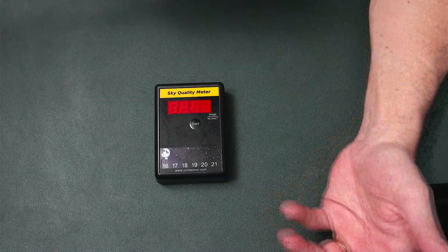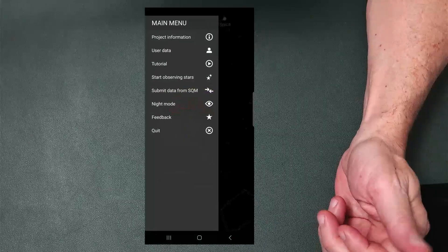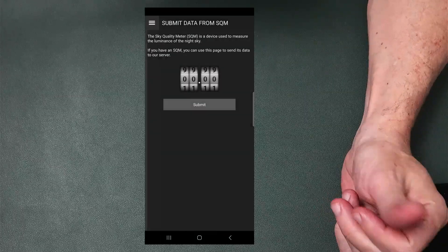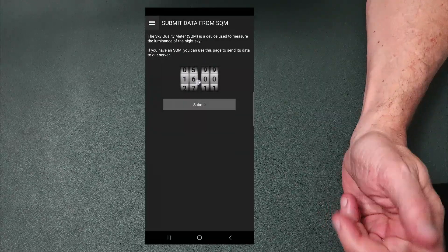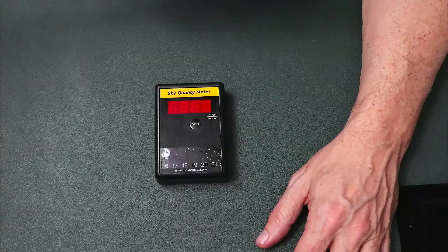And it's similar on the app. Just come over to the section where you need to submit your data, use the little wheels to punch in your SQM reading and submit that data off as well.